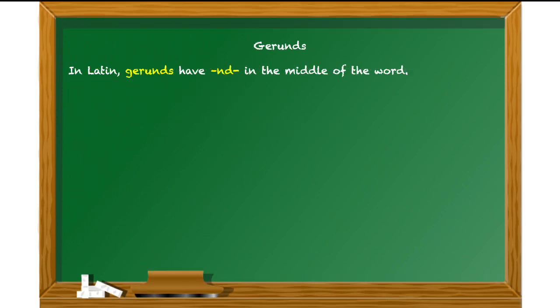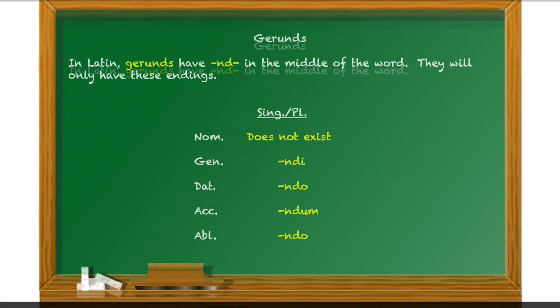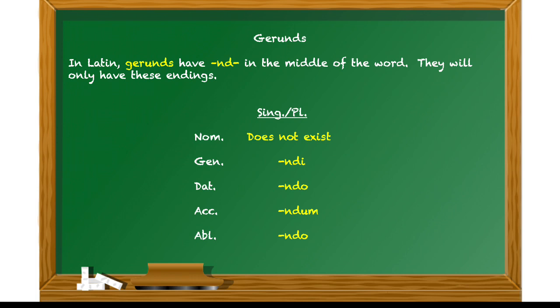In Latin, you'll always be able to recognize a gerund because it has an 'nd' in the middle of the word. They will also have certain endings. So you've got the 'nd' in the middle, and then the following forms. There is no nominative gerund — that just doesn't exist, even though it's a verbal noun. The singular and plural are the same, that's why they're in the same column. The genitive gerund ends with 'ndi', dative 'ndo', accusative 'ndum', and ablative 'ndo'. The key thing is the 'nd' in the middle — and the word 'gerund' itself has an 'nd' in it.